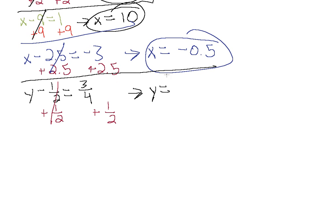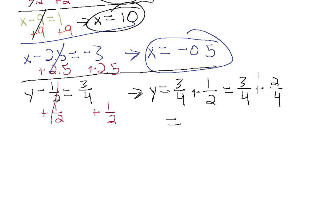Over here we have 3/4 plus 1.5. We need to change 1.5 into a fraction with a denominator of 4 so we can add straight across. We can rewrite this as 3/4 plus 2/4 — 2/4 is the same as 1.5 just over a different denominator. 3 plus 2 is 5 and we still have 4. So y equals 5/4 is our answer to this equation.